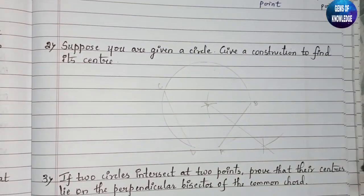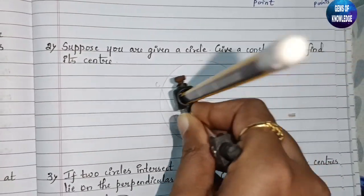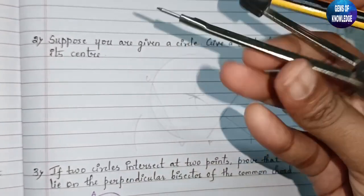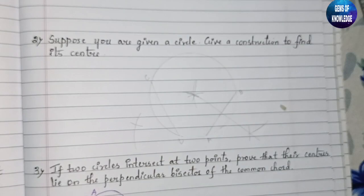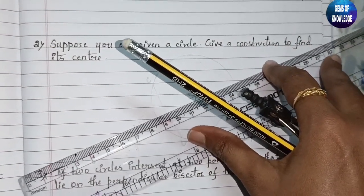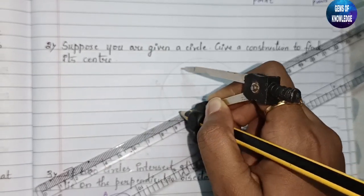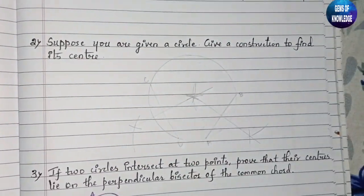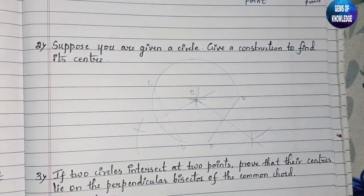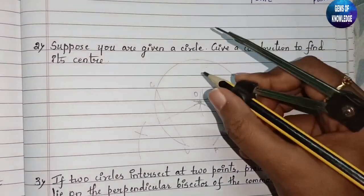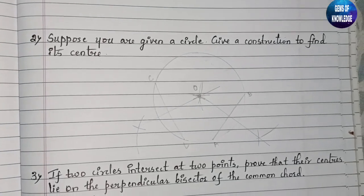Similarly, do the same for chord CD — keep the compass on one endpoint, cut an arc, then on the other endpoint and cross the arc. Join those intersection points as well. The point where both perpendicular bisectors meet is nothing but the center of the circle, O.